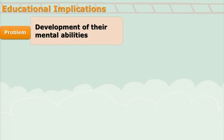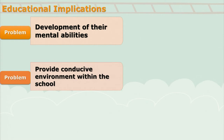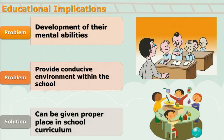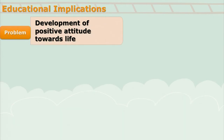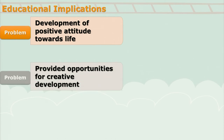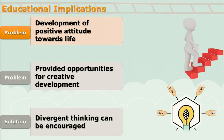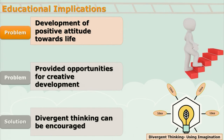As we have seen, at this stage mental abilities of adolescents are developing. They look for a conducive environment within the school. So school curriculum should give enough opportunities where the mental development of adolescents can be taken care of. We also need to develop a positive attitude towards life and provide opportunities for creative development. As teachers, we should encourage students for divergent thinking through different assignments and activities.